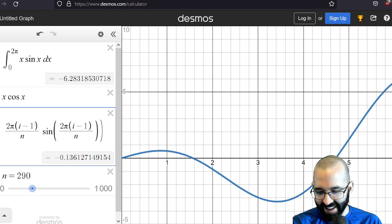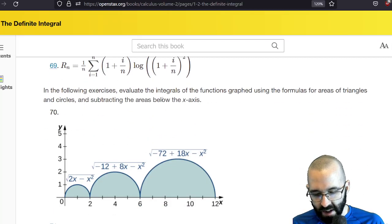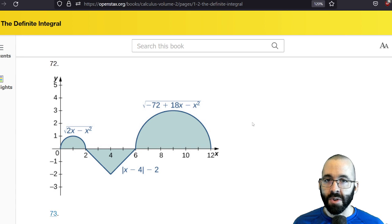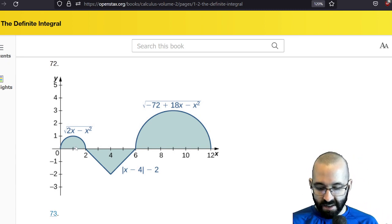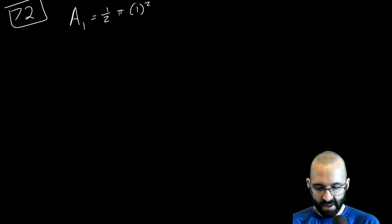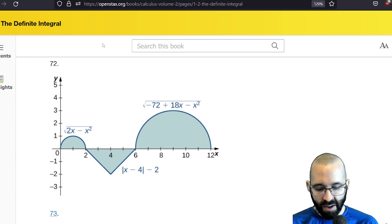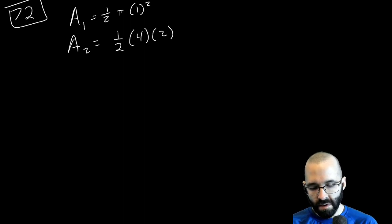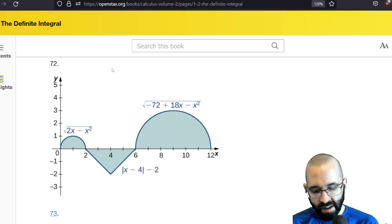Here's 72. Evaluate the integrals of the functions graphed using the formulas for areas and circles, and subtracting the areas below the x-axis. So we're looking at integrals here. Integrals is net signed area. So it's going to be this positive area minus this area plus this last area. So this first area is a semicircle of radius 1, so it's going to be 1/2 π times the radius squared. The second area, which we're going to subtract, is a triangle with base 4 and height 2. And the third area is a semicircle of radius 3.